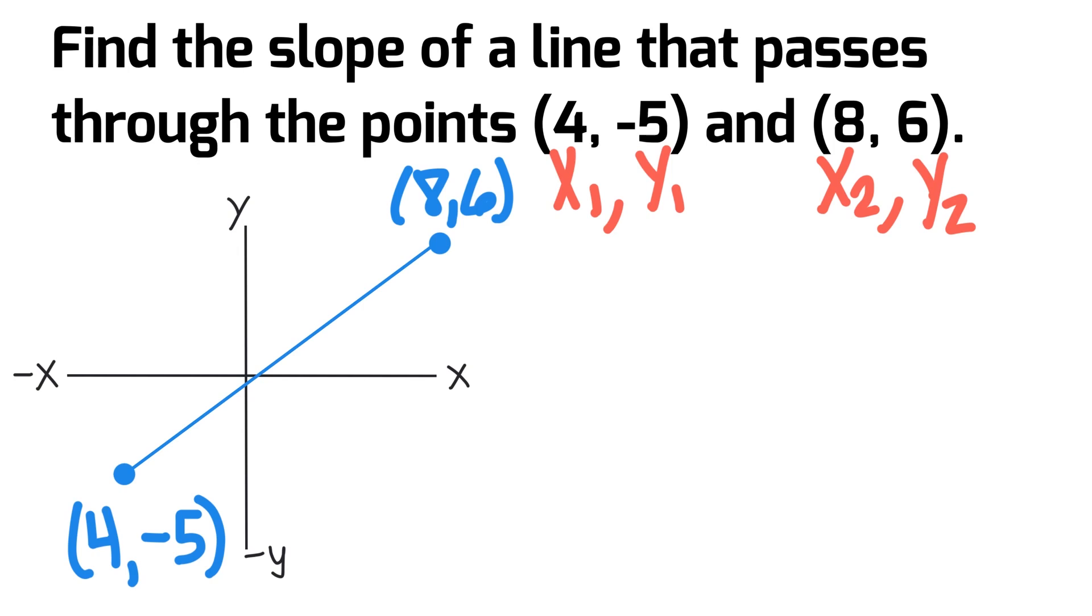So now that we have those two values for each coordinate point, we're going to look at the formula: m equals, or slope equals, y2 minus y1 divided by x2 minus x1. And we now have our values for the different parts.